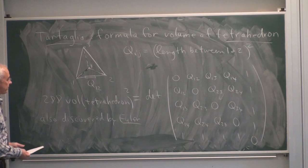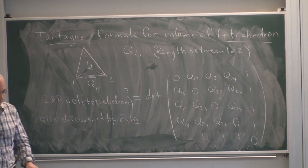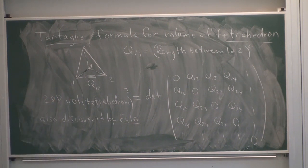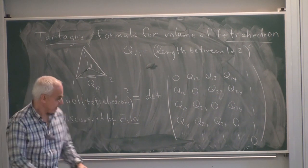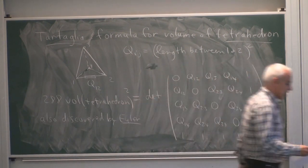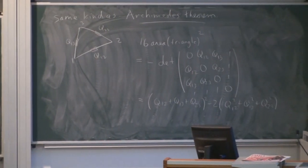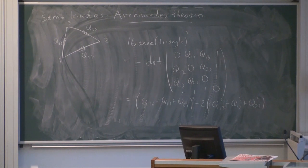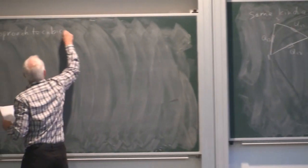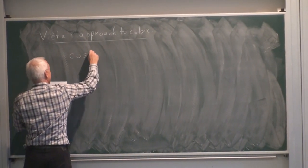I think it's a very beautiful formula. Now I want to say just a little bit more about the cubic equation and go back to our friend François Vieta, who gave a nice interpretation of the cubic equation in terms of a trigonometric identity really related to the classical problem of trisecting an angle. There's a famous conundrum from ancient Greek times. Vieta's approach to the cubic was to look at the formula for cosine 3θ.